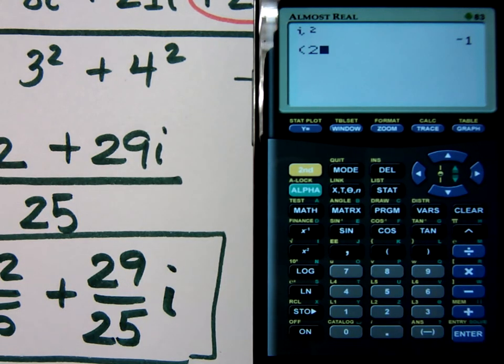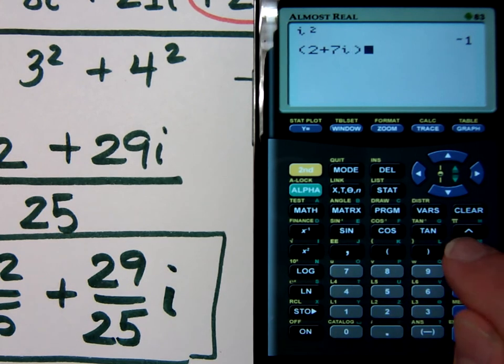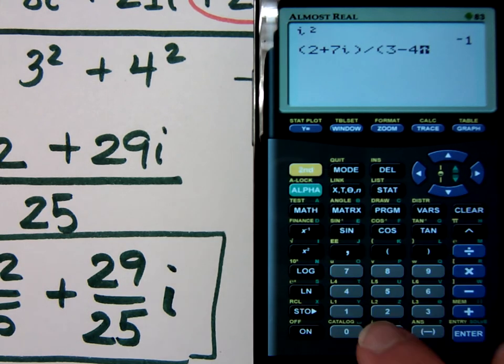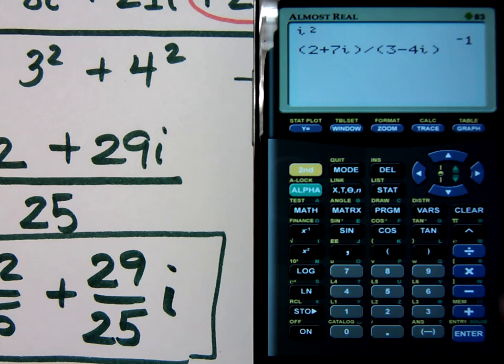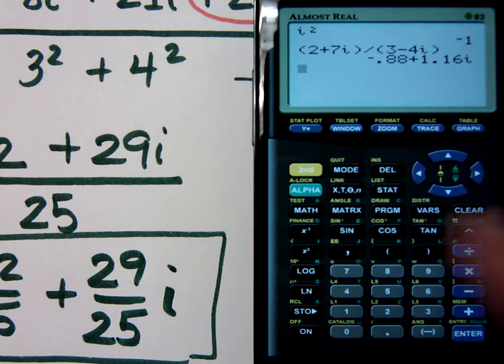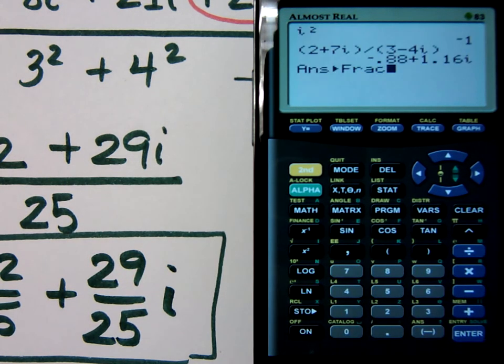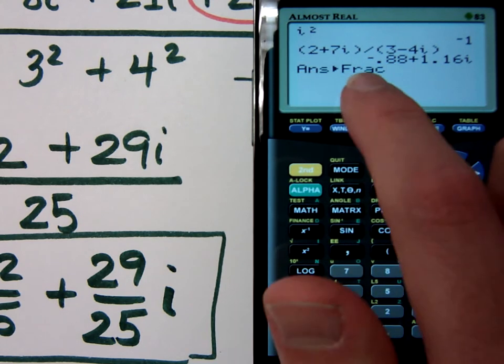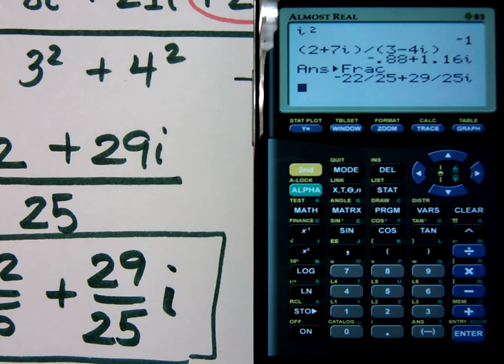If I were to type in this last example that we had done. Make sure you use parentheses for the numerator. Two plus seven I divided by the quantity three minus four I. That's what I have, right? When I do that, I get this answer. Now, that doesn't look like what I got. What's wrong with this? It's automatically going to give it to me in decimal form. So if I want to make it this in fraction form, what do I do? Go to math. So, yes. Math. Enter. Math. When you press enter, it's going to turn your answer into a fraction. And that gives me negative 22 25ths and 29 25ths. Isn't that what I got? Oh, my word.